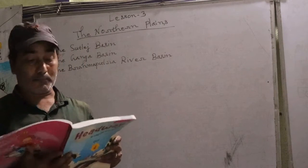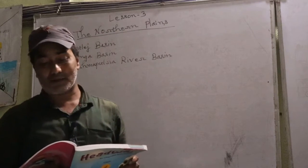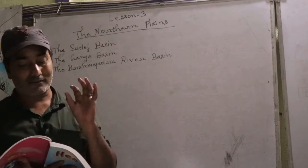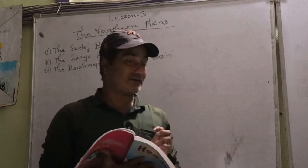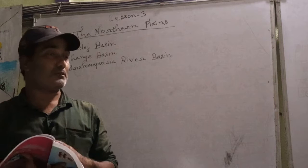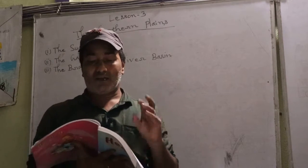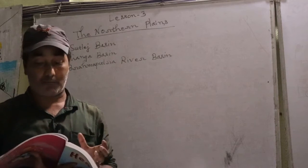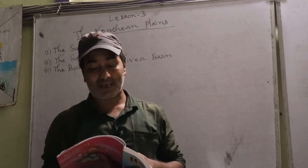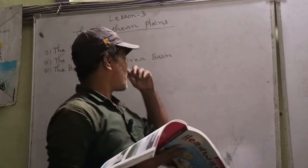The Satluj River and its tributaries flow through the states of Punjab and Haryana. In the Satluj River you will find the Bhakra Nangal Dam, which is on the Satluj River and is one of the largest dams in India.